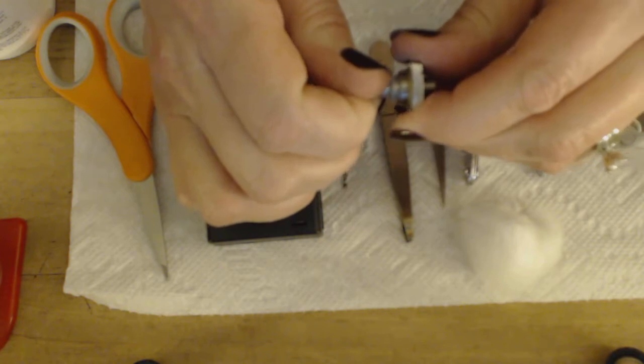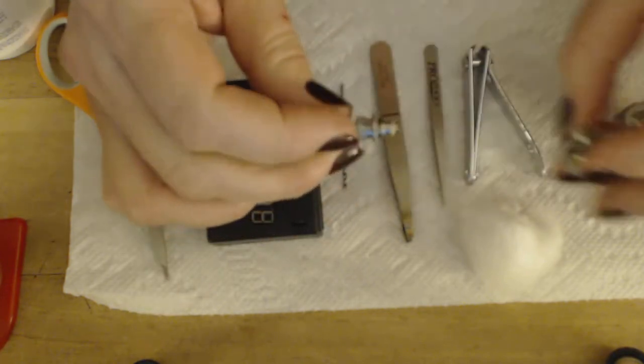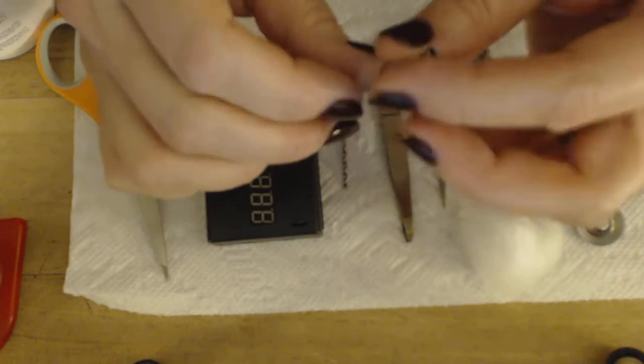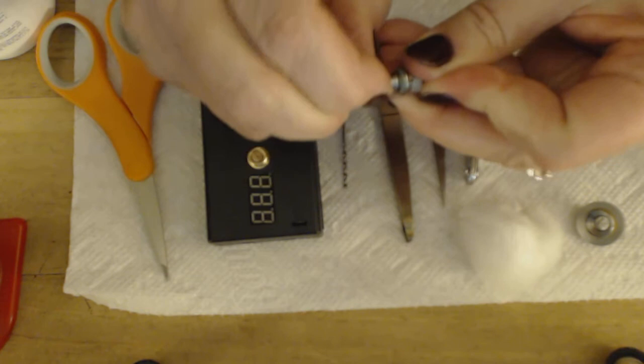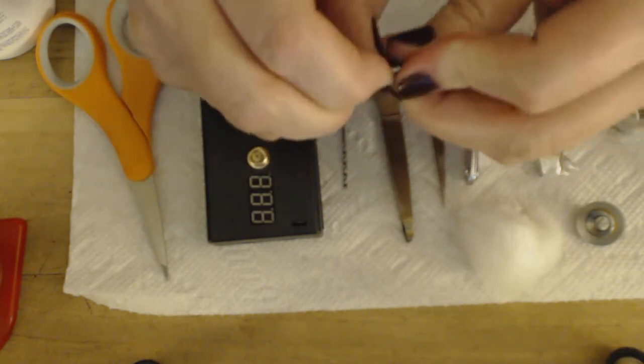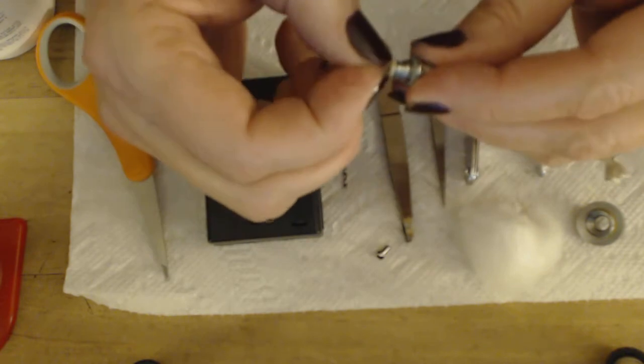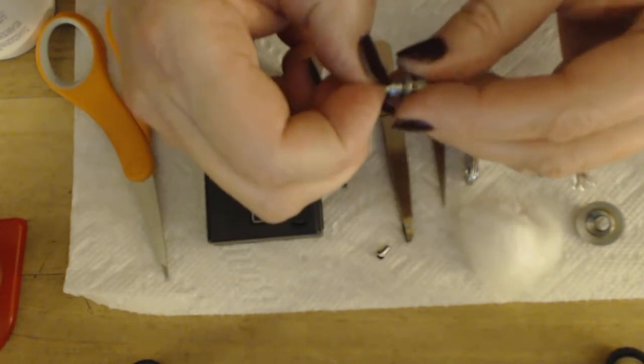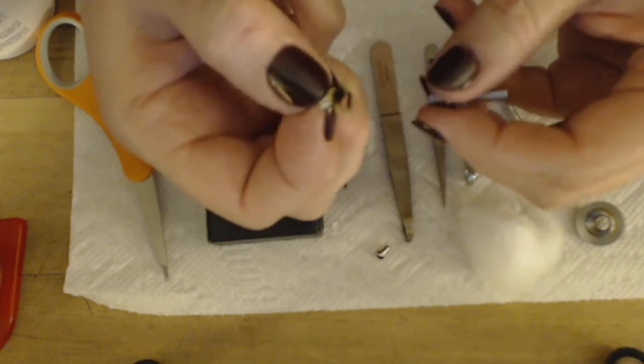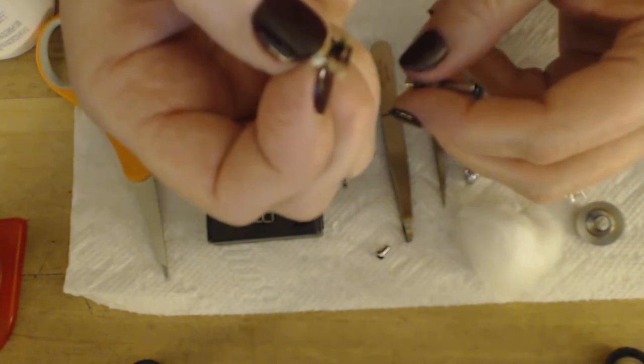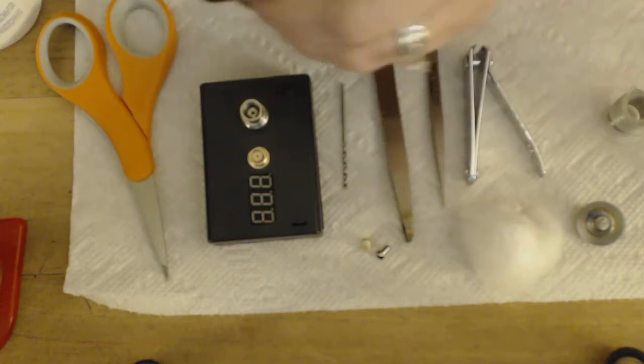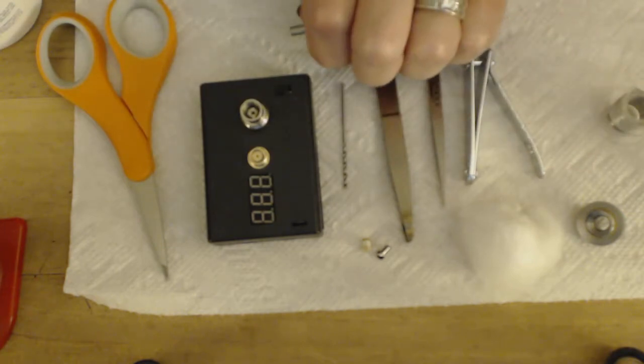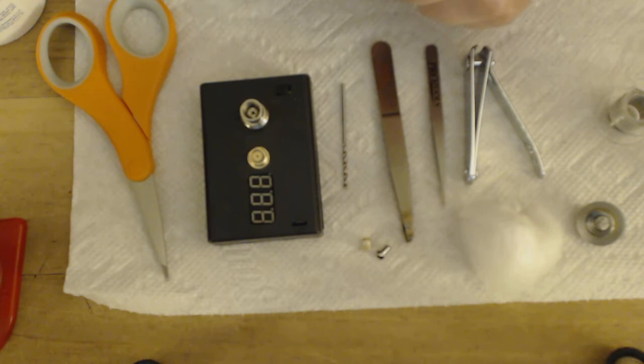I'm going to pull this pin out. There we go. Next is the insulator, and sometimes the coil comes with it. You see that's pretty black and nasty. Now I'm going to take the stem off.